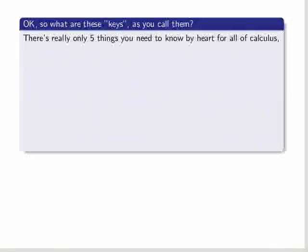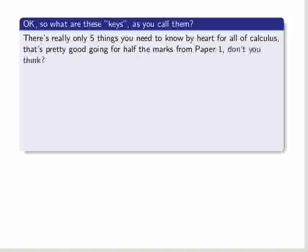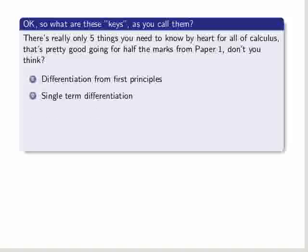So what are these keys as you call them? There's really only five things you need to know by heart for all of calculus, and that's pretty good going for half the marks from Paper 1, don't you think? Differentiation from first principles, single-term differentiation, the product rule, the quotient rule, and the chain rule.